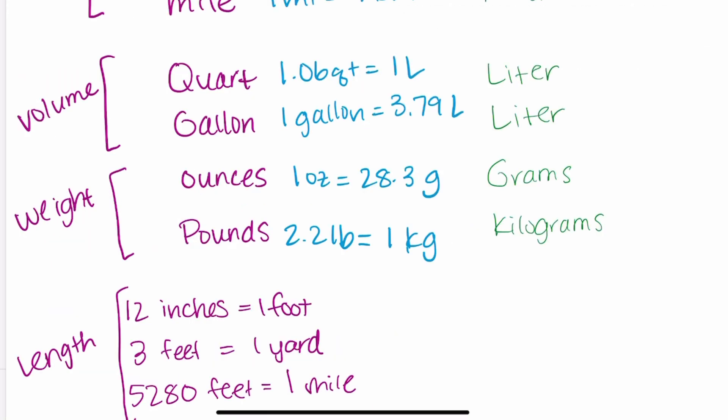Now let's move on to the volume units. In the standard measurements we have quart and gallon. In the metric system we have the liter. So 1.06 quarts is equal to one liter. One gallon is equal to 3.79 liters.